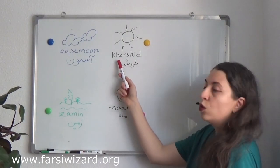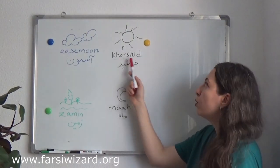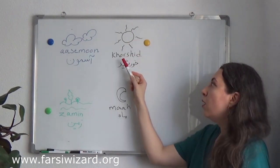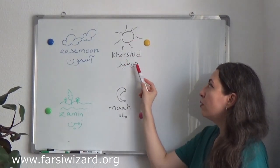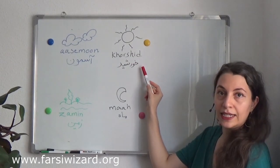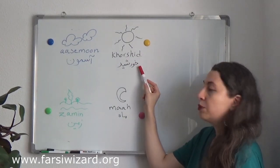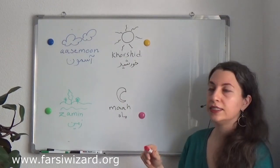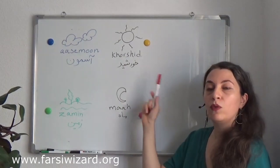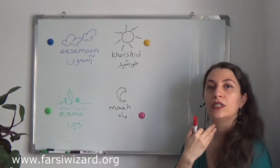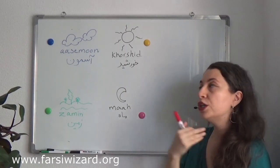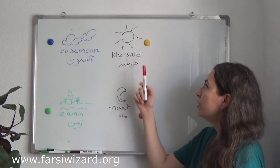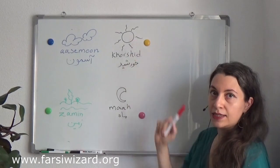We have the word 'khorshid.' Khorshid is the sun. Now the first sound, 'kh,' does not exist in English. In some other languages like German, for example, you can produce that, but in English it's usually difficult for English speakers. Remember, the way to produce the sound is as if you're trying to clear your throat. So khorshid — khorshid is the sun.